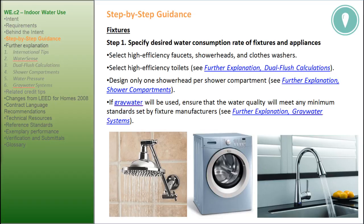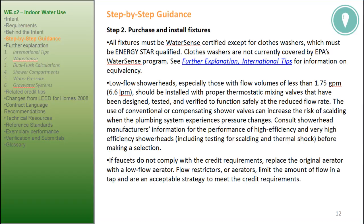Step-by-step guidance — Fixtures. Step 1: specify desired water consumption rate of fixtures and appliances. Select high-efficiency faucets, showerheads, and clothes washers. Select high-efficiency toilets — see further explanation on dual flush calculations. Design only one shower head per shower compartment. If gray water will be used, ensure that the water quality will meet any minimum standards set by fixture manufacturers. Step 2: purchase and install fixtures. All fixtures must be WaterSense certified, except for clothes washers, which must be Energy Star qualified. Clothes washers are not currently covered by EPA's WaterSense program.